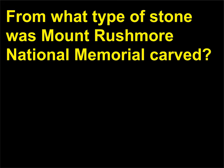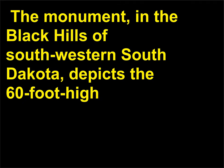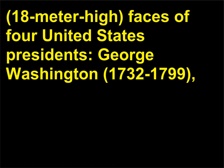From what type of stone was Mount Rushmore National Memorial carved? Granite. The monument, in the Black Hills of southwestern South Dakota, depicts the 60-foot high faces of four United States Presidents. George Washington, 1732–1799.